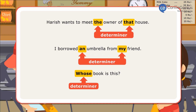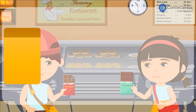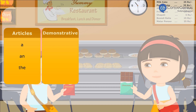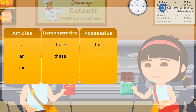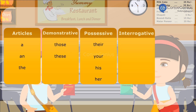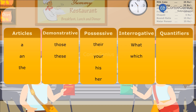Here is a list of some determiners. Articles: a, an, the. Demonstrative: those, these. Possessive: their, your, his, her. Interrogative: what, which. Quantifiers: few, several.